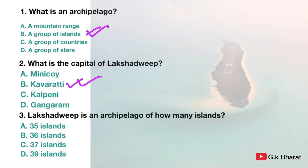Next question. Lakshadweep is an archipelago of how many islands? Option A: 35 islands. Option B: 36 islands. Option C: 37 islands. Option D: 39 islands. Your correct answer is option B — 36 islands.